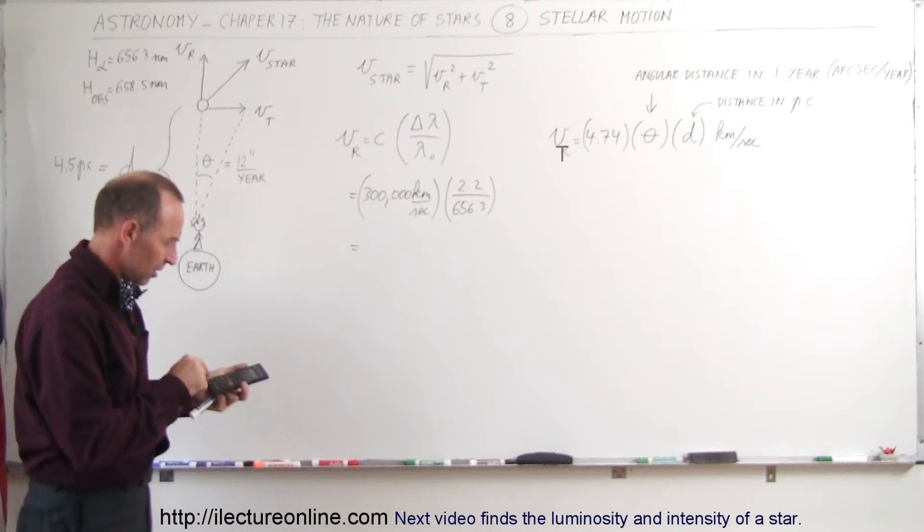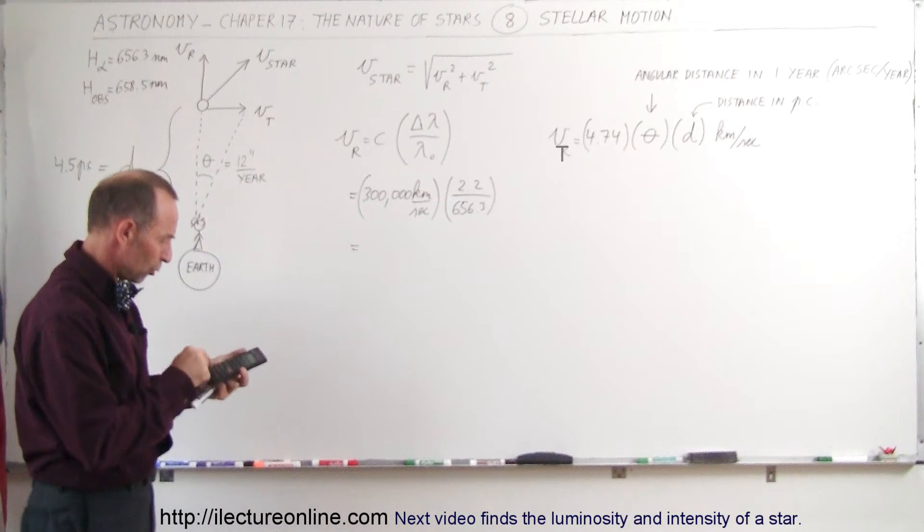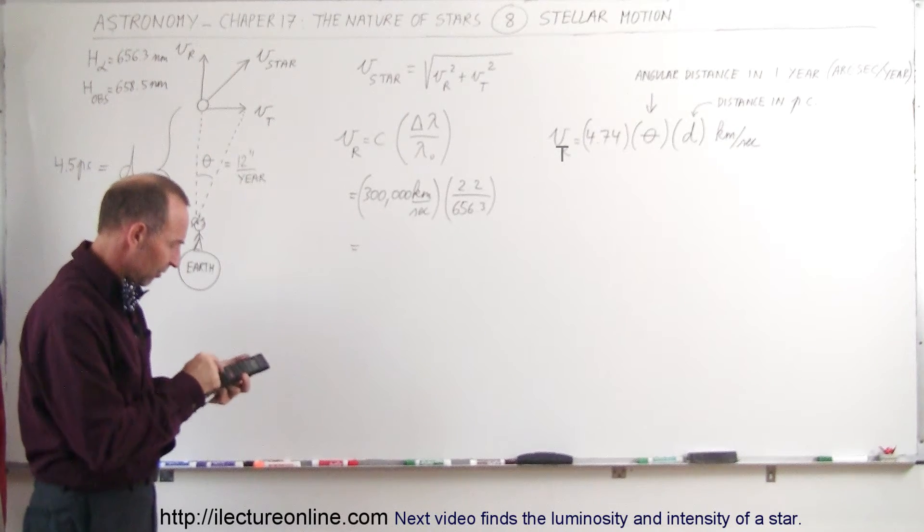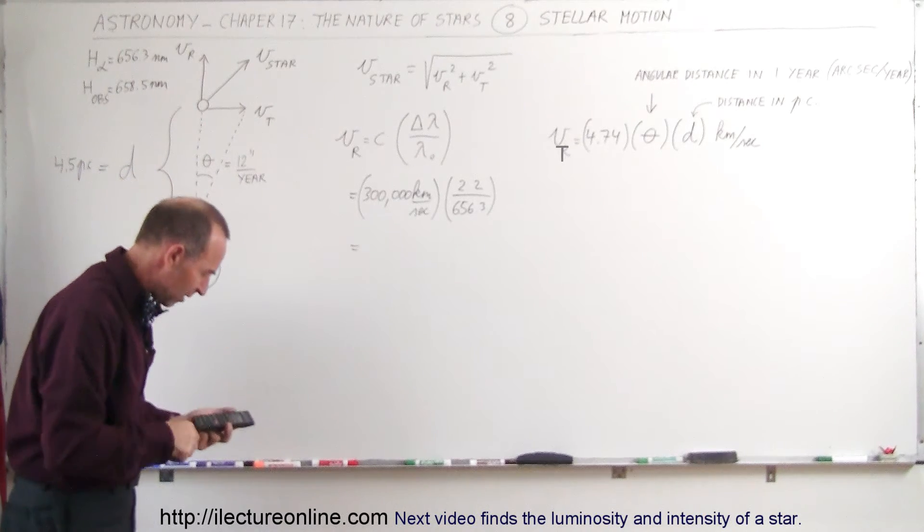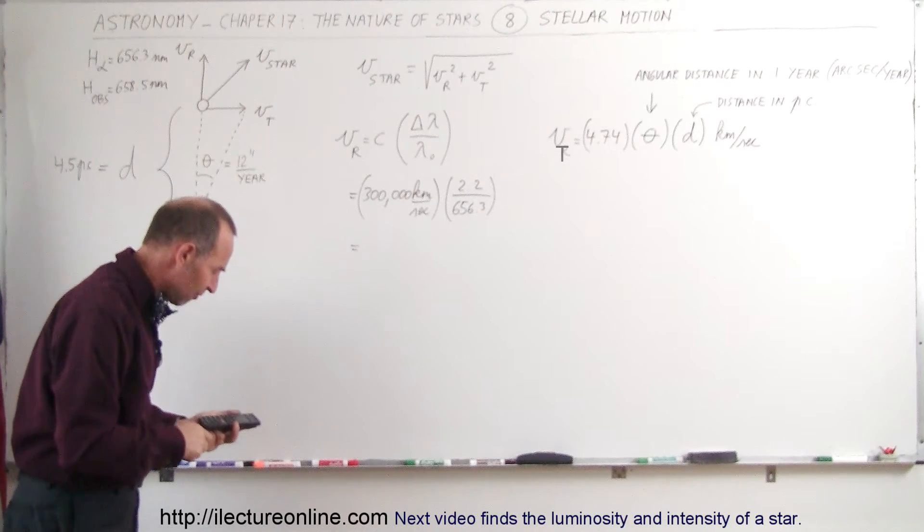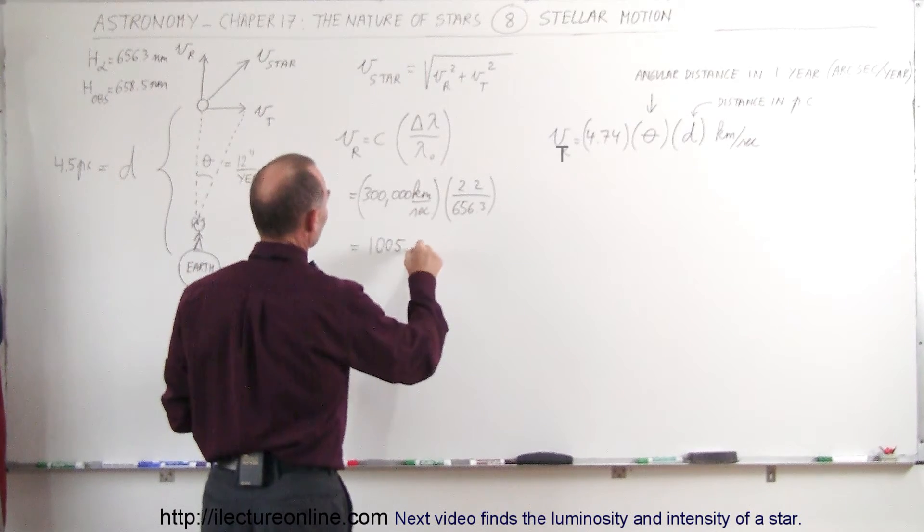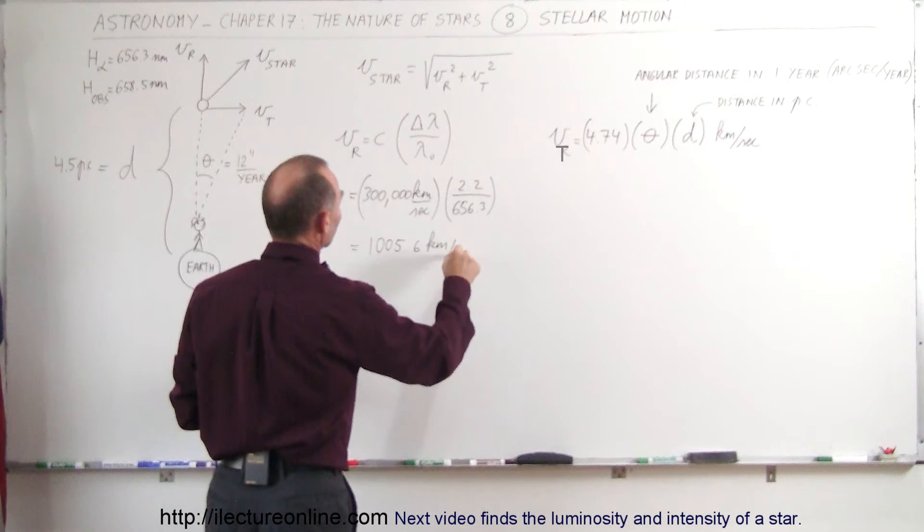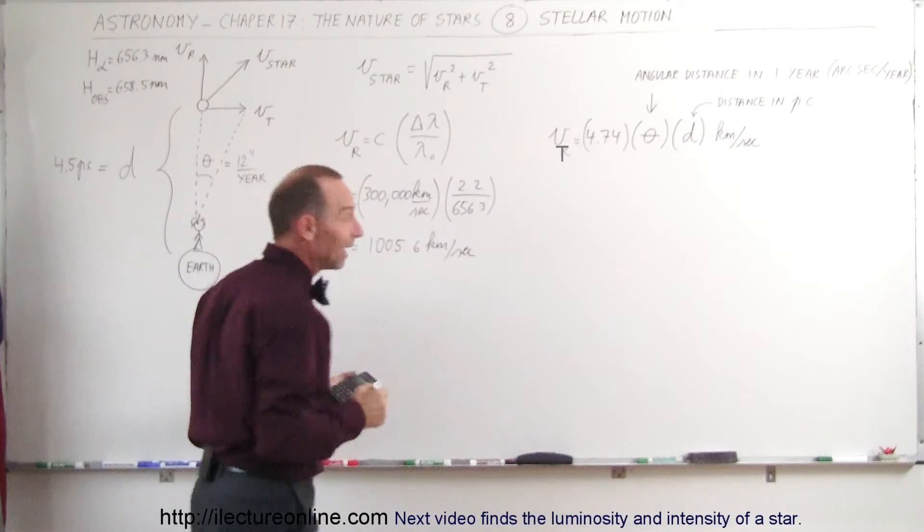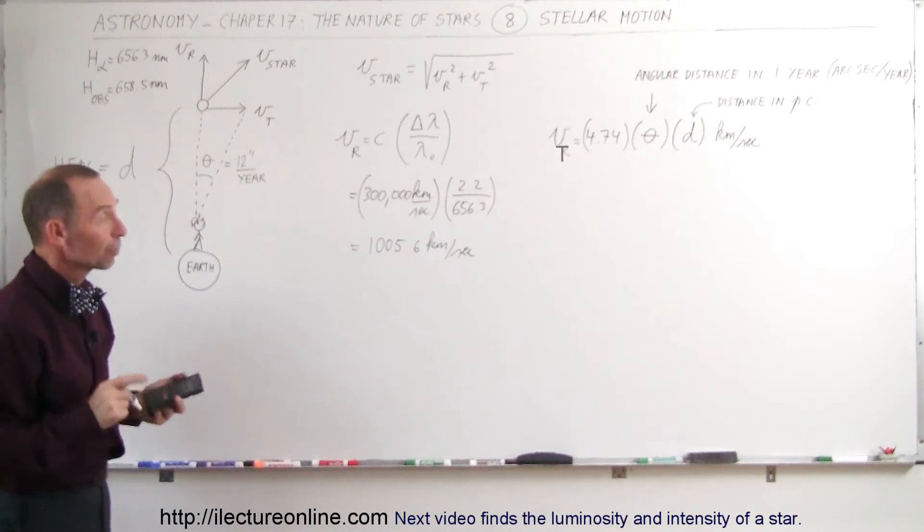So 300,000 times 2.2 divided by 656.3, and we get 1,005.6 kilometers per second. So we know that star is moving away from us at slightly over 1,000 kilometers per second.